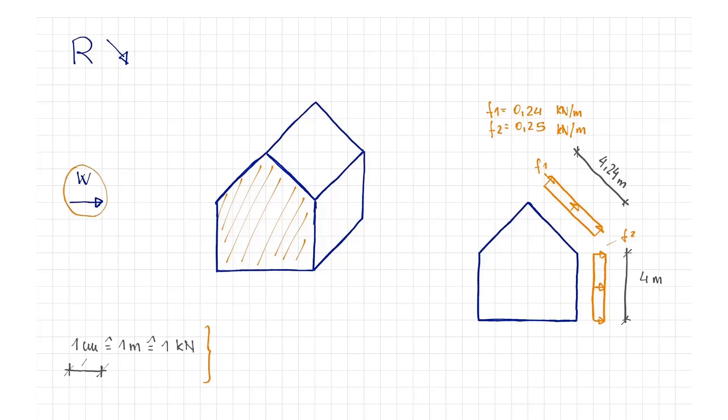The wind force from the left side creates suction on the right side of the house. The loads assumed include a 0.24 kN per m distributed load with a length of 4.24 m on the rafter and 0.25 kN per m with a length of 4 m on the wall.